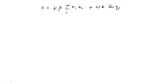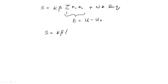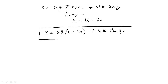Now, we have just seen that sum over i of ni epsilon i is E, which equals the total internal energy minus u0. u0 is the total internal energy of the system if all the particles were in the state with energy epsilon 0, which equals 0. So now we have derived an expression for entropy: s equals k beta times (u minus u0) plus N k ln q, which is expressed in terms of the partition function of the system. In part 2 of this lecture, we will use the expression of internal energy derived here to write beta in terms of the temperature.